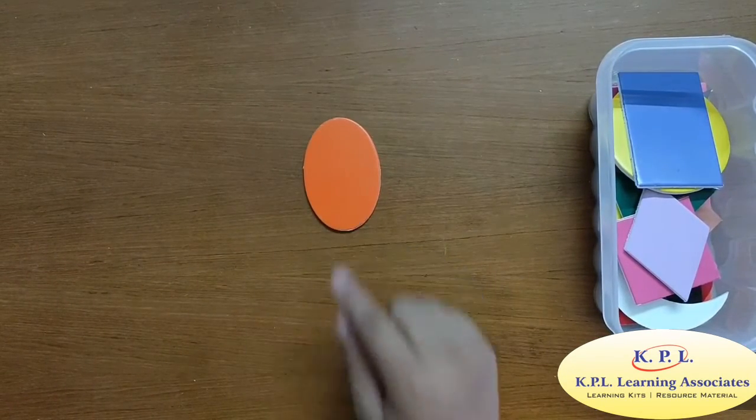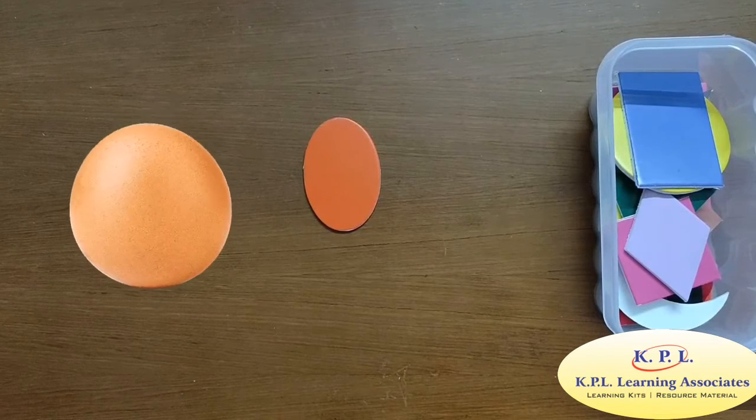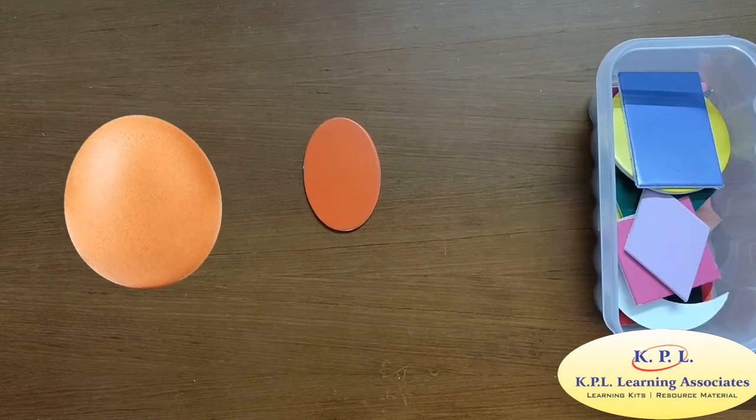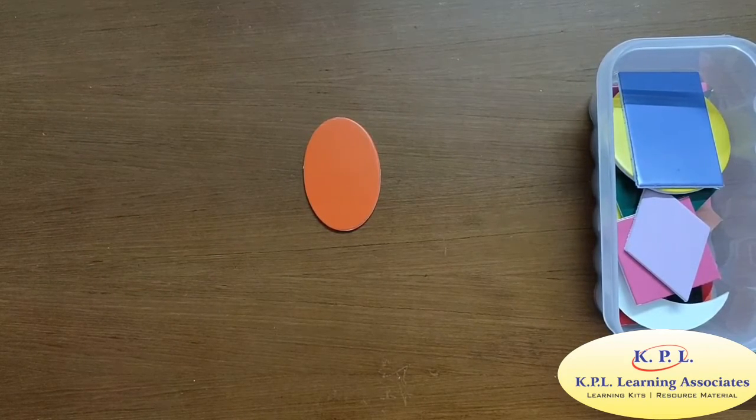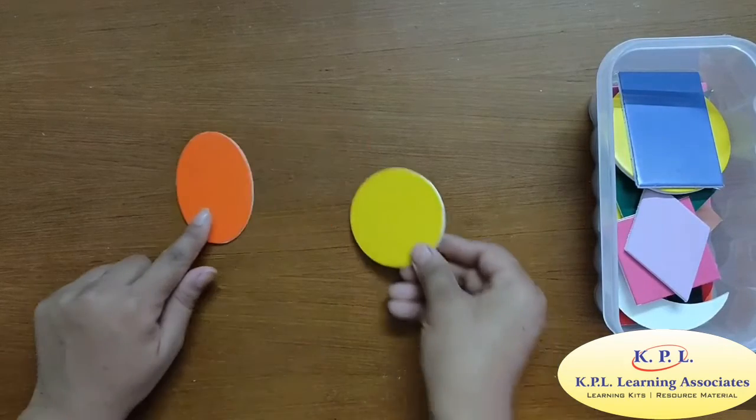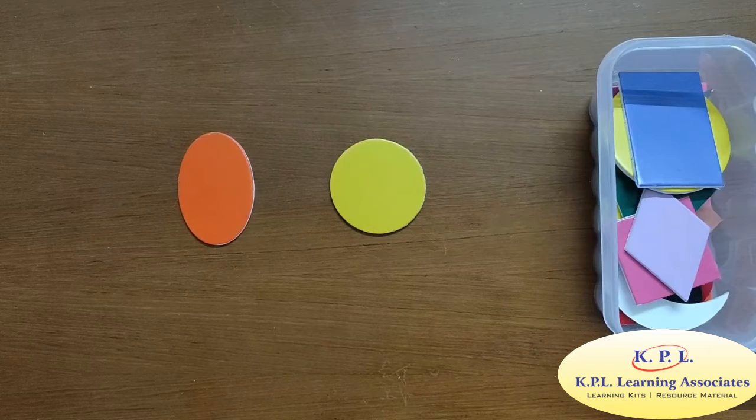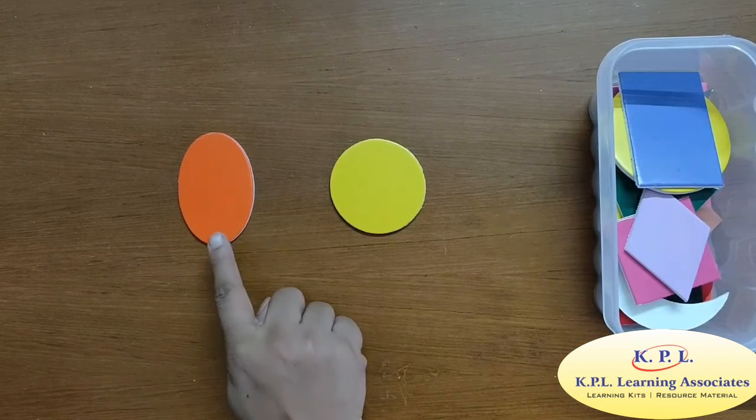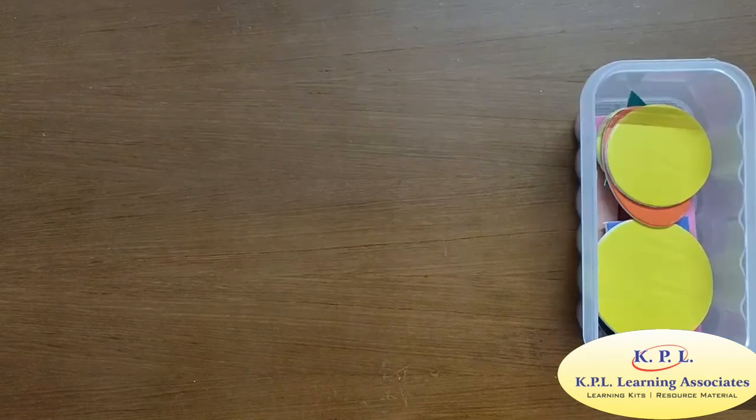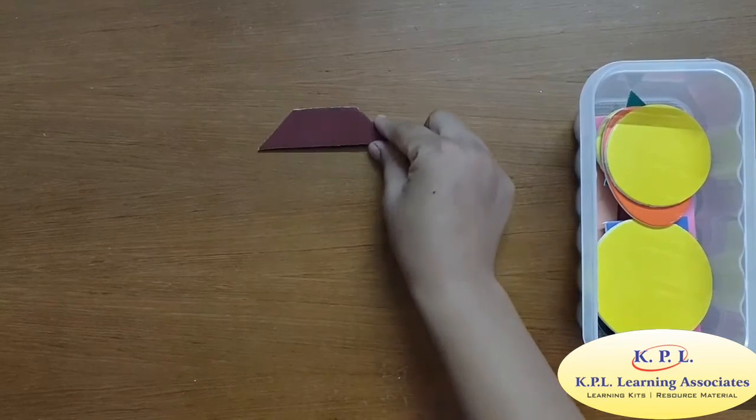Here comes oval. It looks like an egg. It has no sides and no corners. Do you remember we had another shape with no corners? Yes. Circle. Can you please tell me the difference in circle and oval? Oval is little elongated.